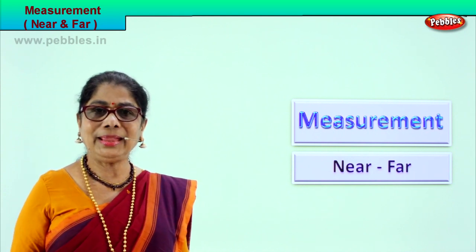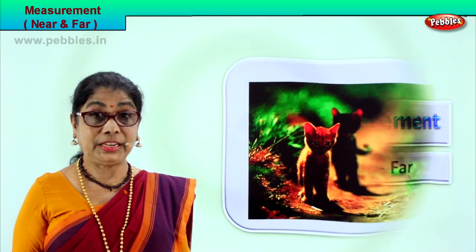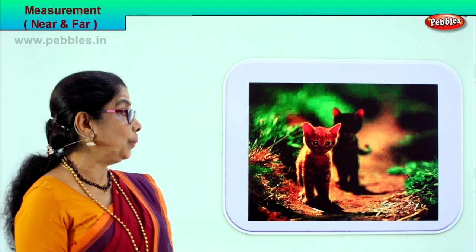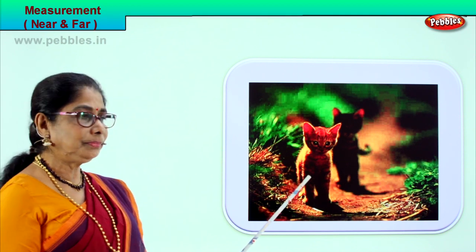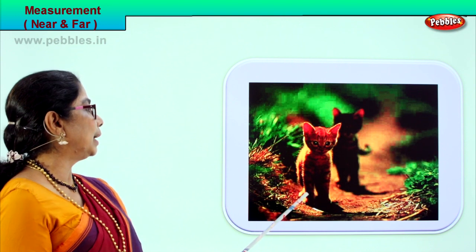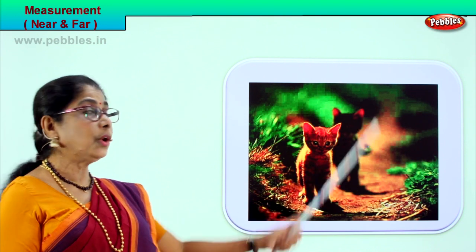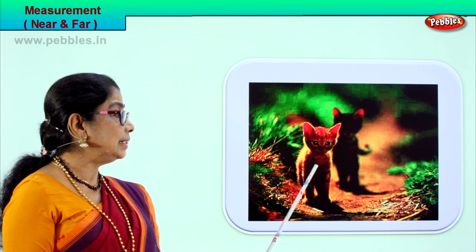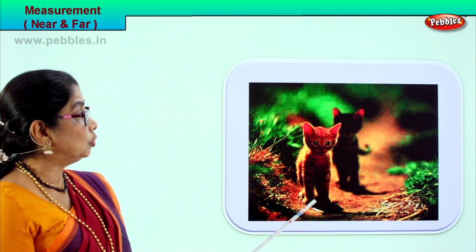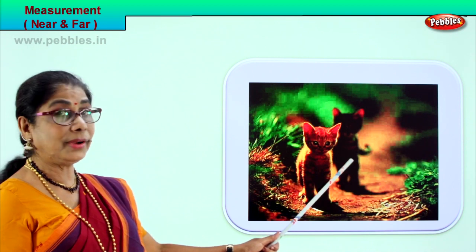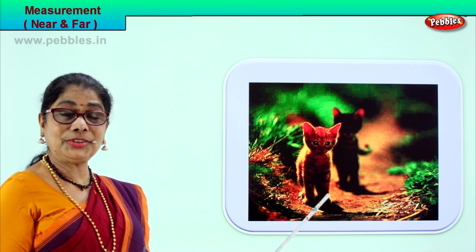Here is our first picture. Look what we have here — a little pussycat close by, and there's another pussycat far away. So this one is near and this one is far. Something that is close by is near, and something away from you is far. Near and far — do you understand?